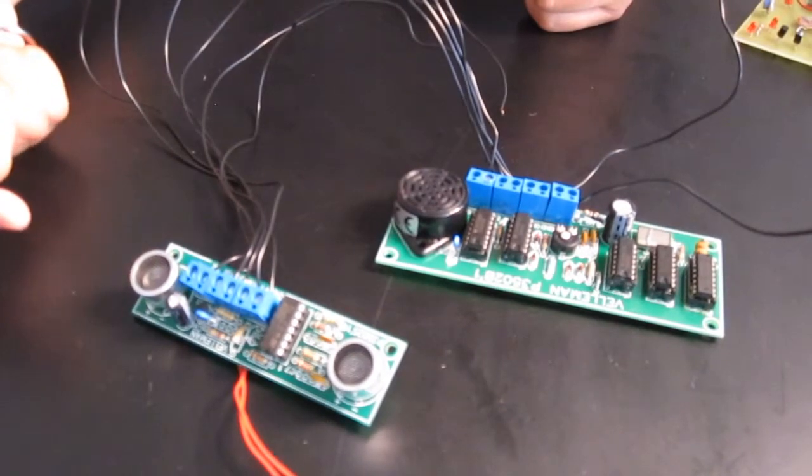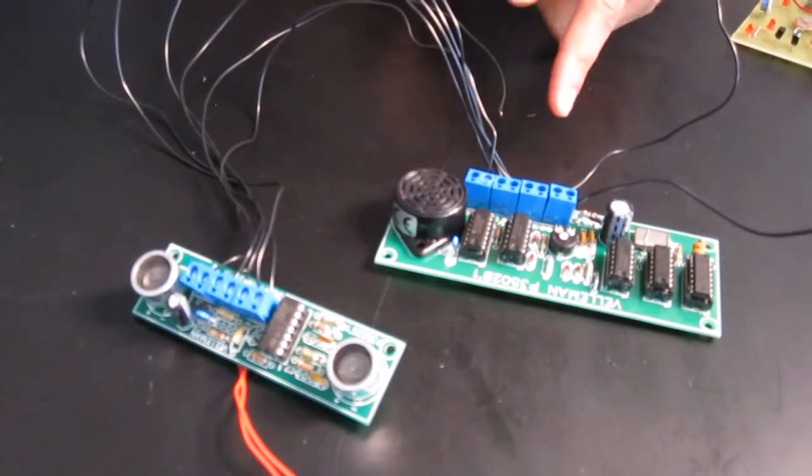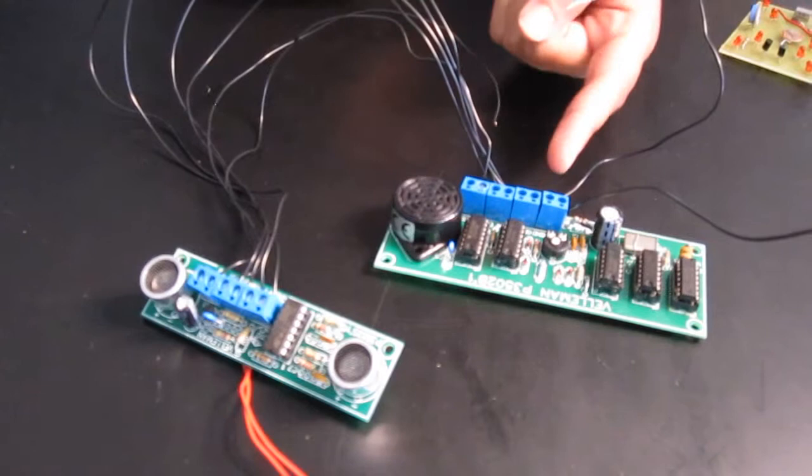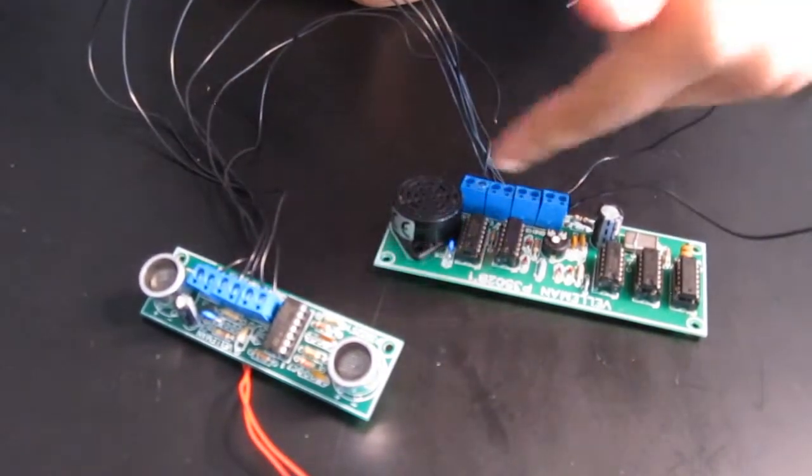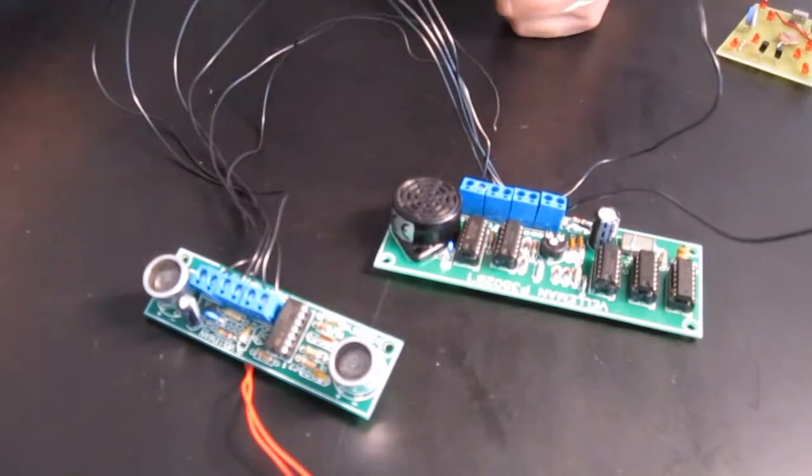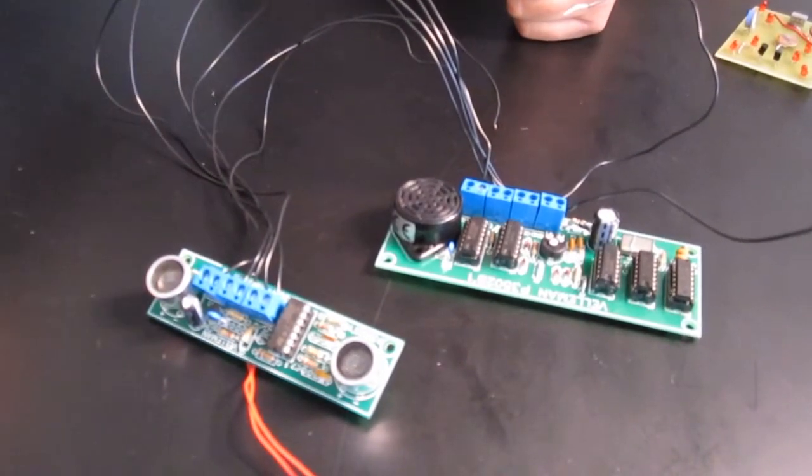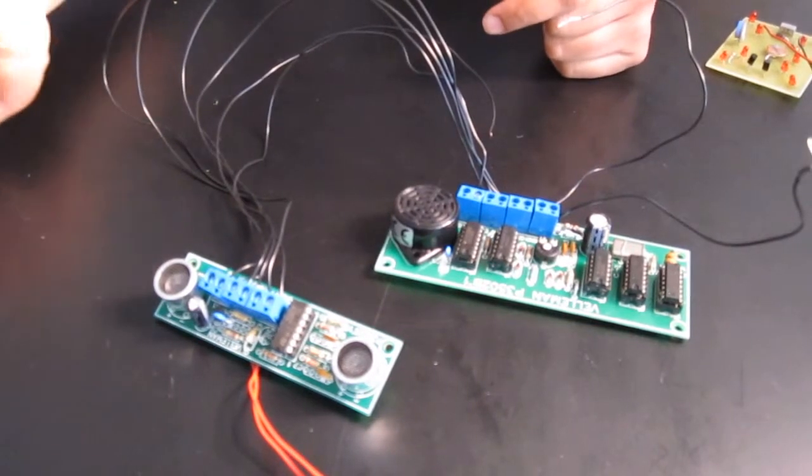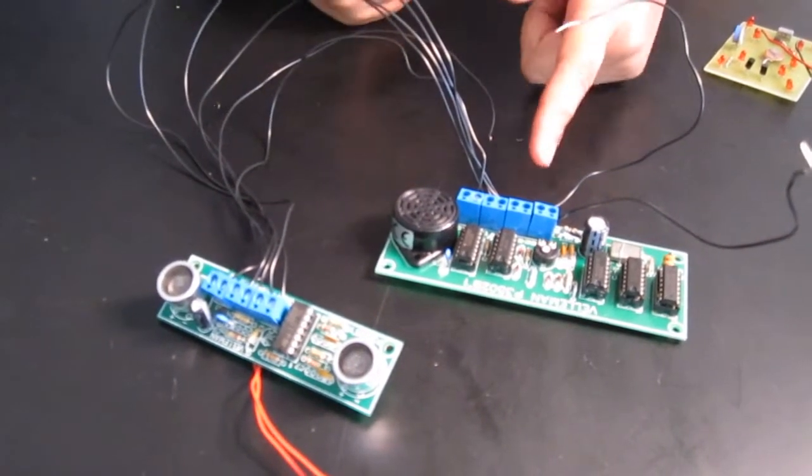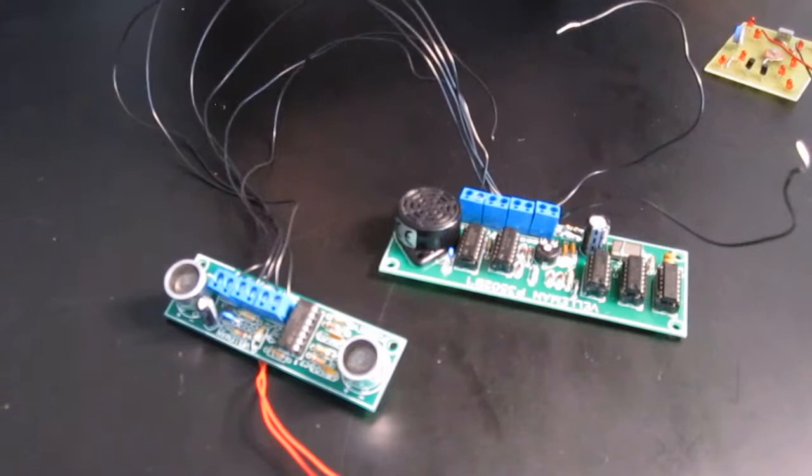If this voltage exceeds the breakdown threshold of the Zener diode, then the current will continue to flow through the circuit and will trigger the buzzer to sound. But if the object is a certain distance away from your car, then the sound wave will not have that given voltage, and then the current will not go through and trigger the buzzer.